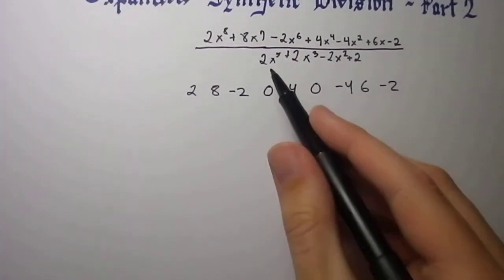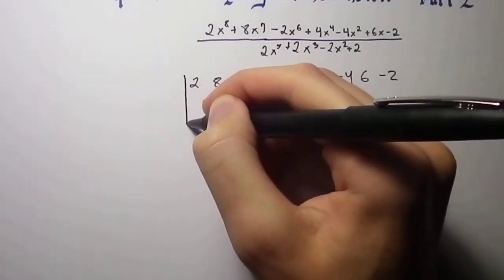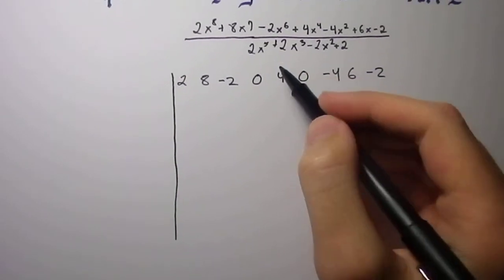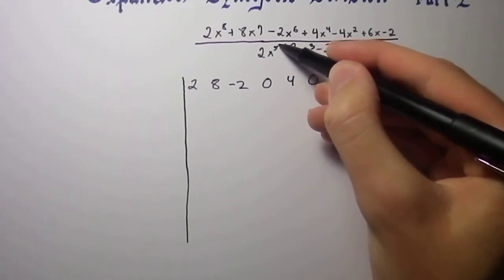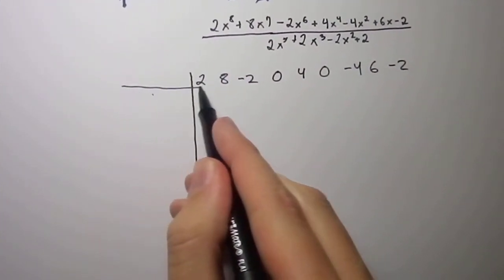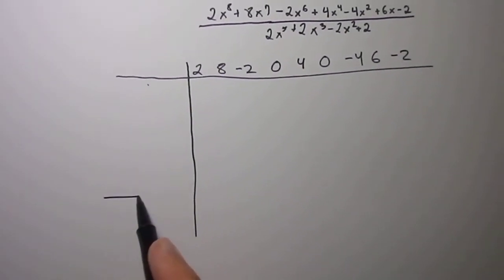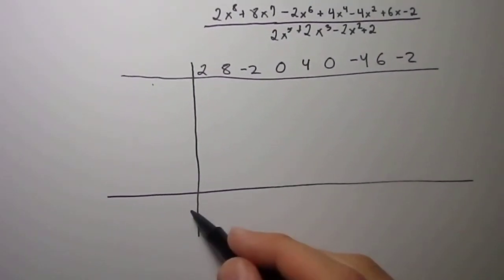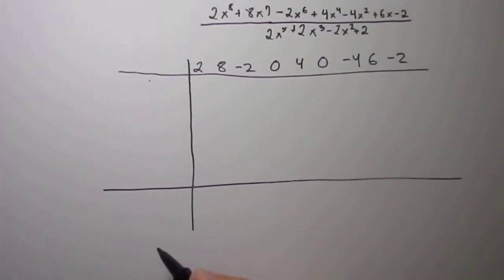Next is, you want to do a vertical line here. Now, since you have about, or since this is to the degree of 5, you want to leave about 5 rows here. Okay, so approximate about 5 rows, and then